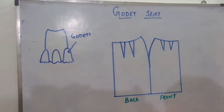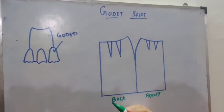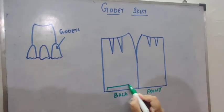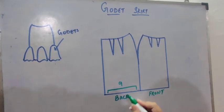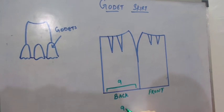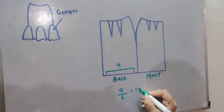Now we will make a Godet. It totally depends on you how you make it. Suppose this is 9 inches. So we will be dividing 9 by 6. It will be 1.5.